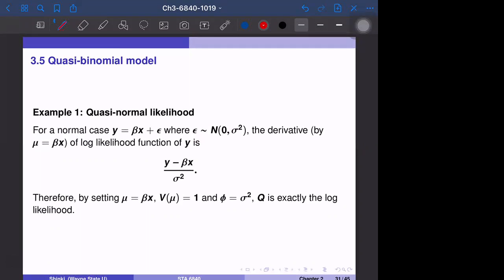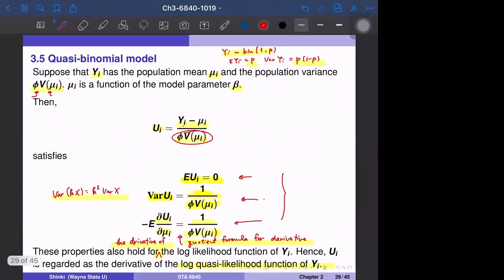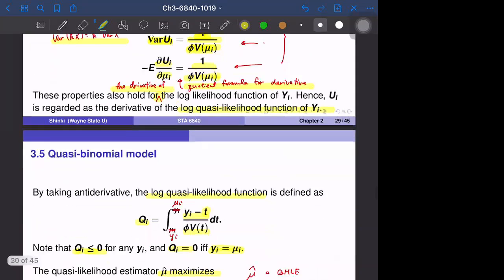Hi everyone. We have examples for quasi-maximum likelihood estimator. Remember that last time we defined this quantity, the u_i, which is y_i minus expectation over the variance of y_i. Then if we integrate this u_i, that is called the quasi-maximum likelihood function.